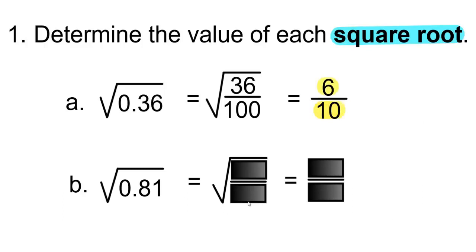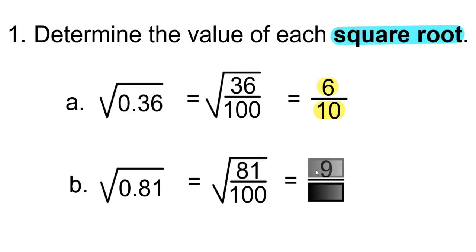What is the square root of 0.81? The last digit, which is a 1, is in the 100s column, therefore it's out of 100. The 81 will be your numerator. The square root of 81 is 9, and the square root of 100 is 10, so the answer is 9 over 10.